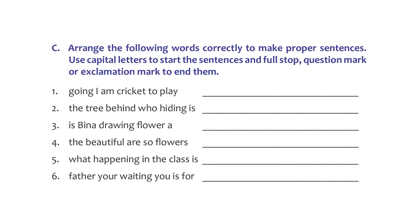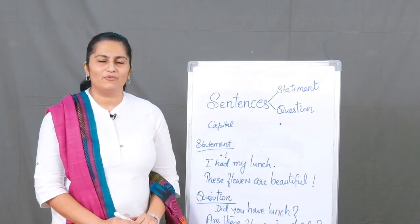Let's take one example from the exercise: 'going I am cricket to play' — that's a jumbled sentence. When we correct it, it becomes 'I am going to play cricket' and it's a statement sentence, so we put a full stop at the end. Why don't you try the rest of the sentences, arrange them in proper order, and use the proper punctuation? That brings us to the end of Unit 1.